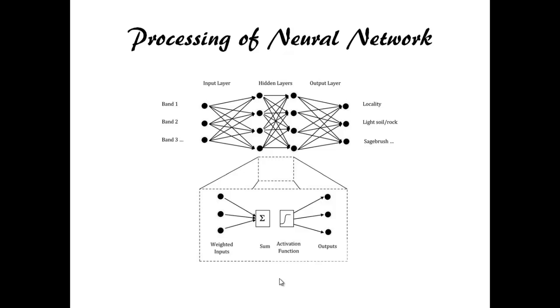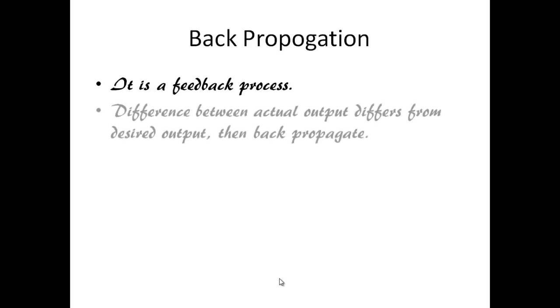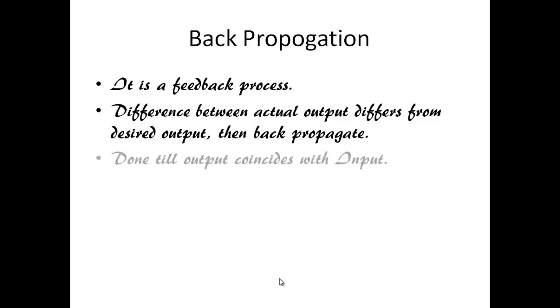If actual output is different from the desired output then backpropagate. Backpropagation is a feedback process used when there is a difference between actual output and desired output. This process modifies the weight of input connection by going back from output unit to input unit.